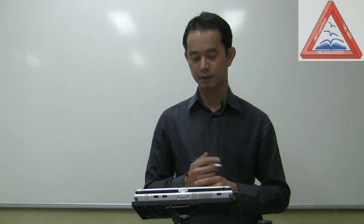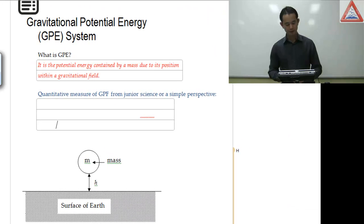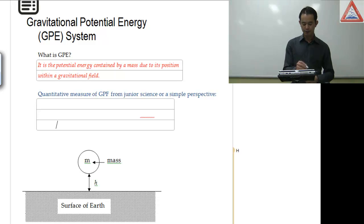In a nutshell, GPE, or gravitational potential energy, of an object is the amount of energy that is stored by that object in the gravitational system of a planet such as Earth. So, here it is. As it says here, it's the potential energy contained by mass due to its position within a gravitational field.